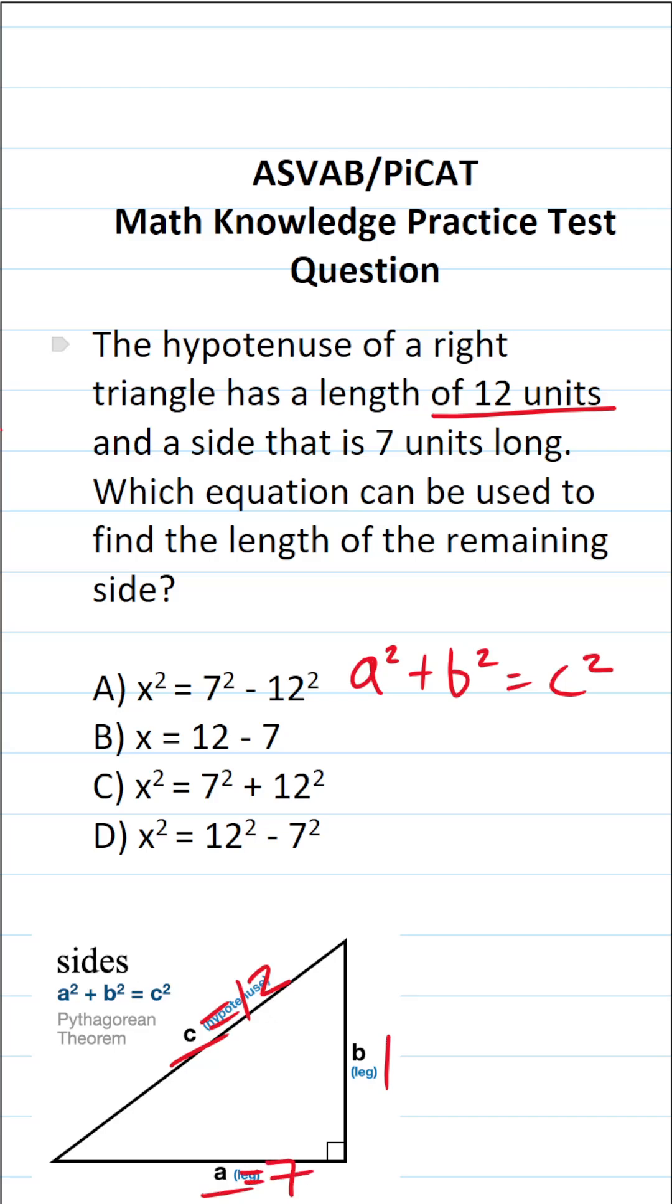We want to know the length of the remaining side. Since the length of the remaining side, that is B, is unknown, let's just let it be equal to X.